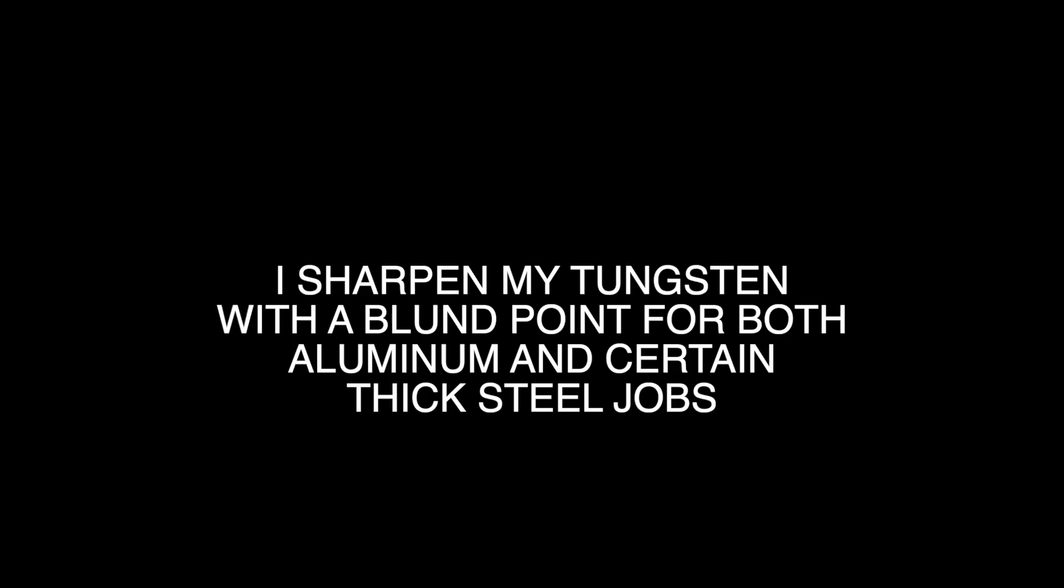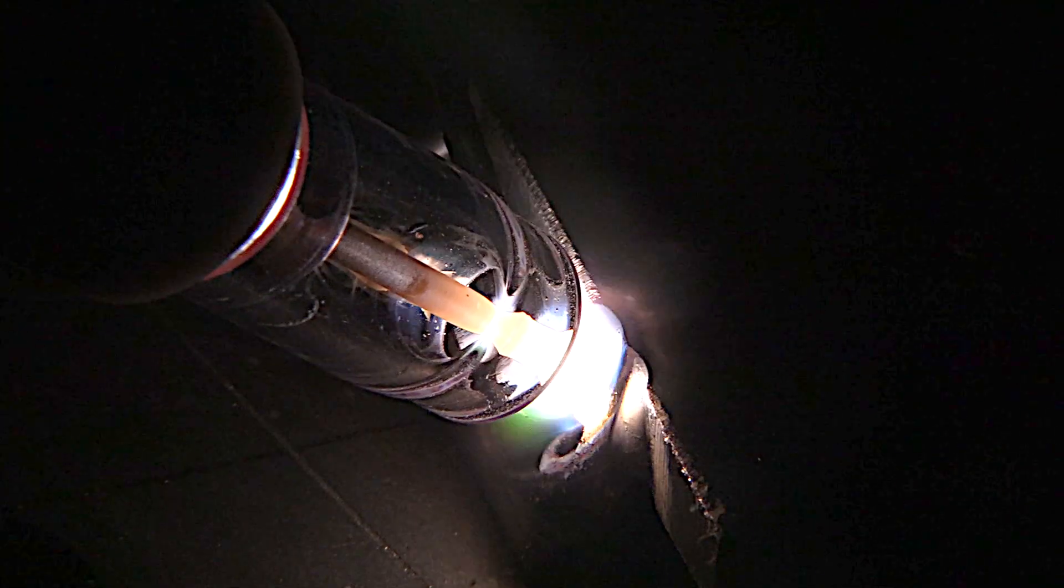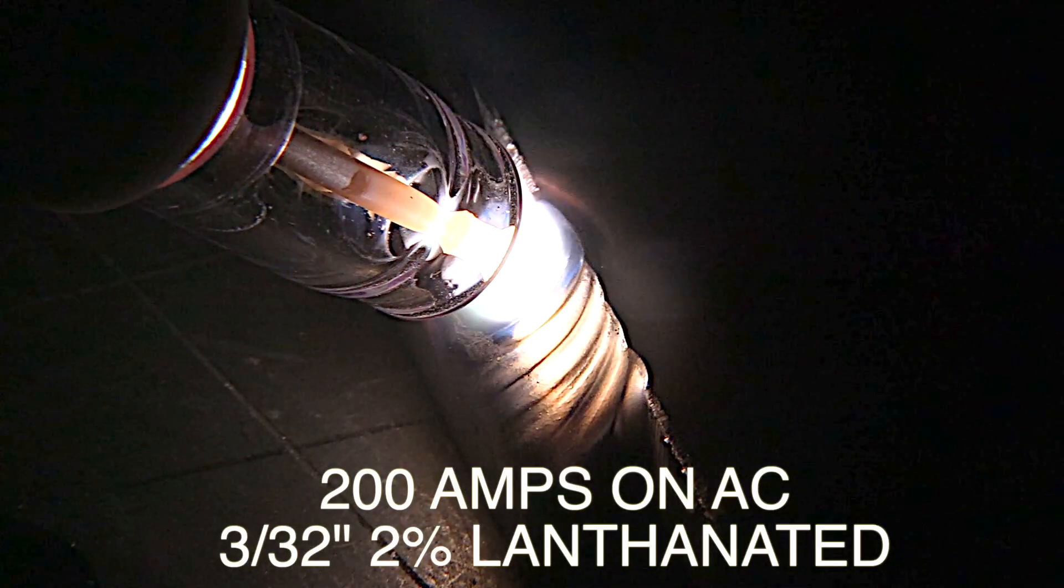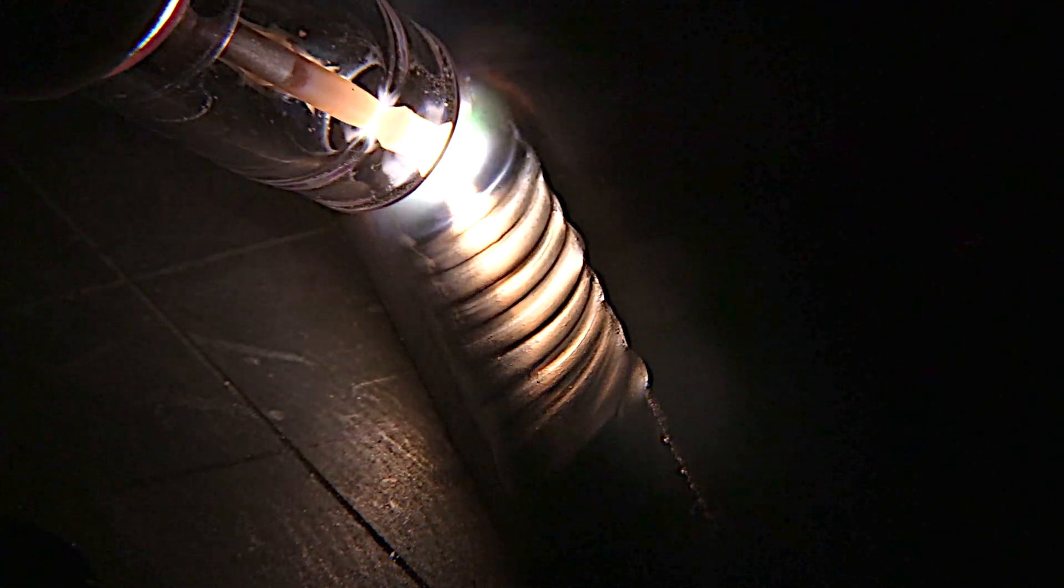I generally prep my tips for aluminum the same as I do for thick high amperage steel with a fairly blunt tip like I did to begin with. Just like this. The pointed tip gives me a crisp arc start and up to around 200 amps like I'm welding right here. It holds up really well. It doesn't mis-shape typically.